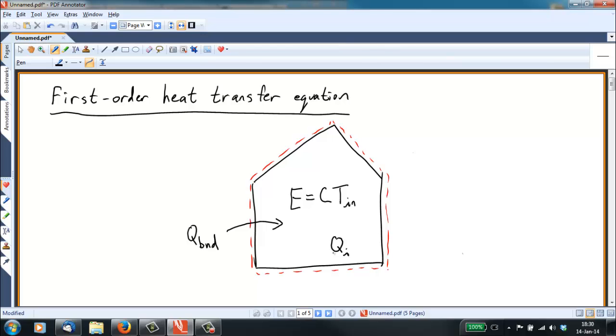When we do this, we can write an energy balance for the house, and we can say that the change in energy over time is equal to the heat that comes across the boundary plus the heat that is being generated internally. These are just energy flows, and the amount of energy that comes in per unit time is how much the energy in the interior changes. But since we said that E equals some constant C times T_in, we can write on the left-hand side C times the derivative of T_in over dt equals Q_boundary plus Q_interior.